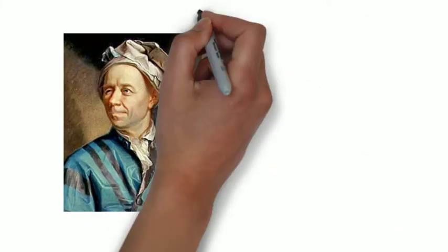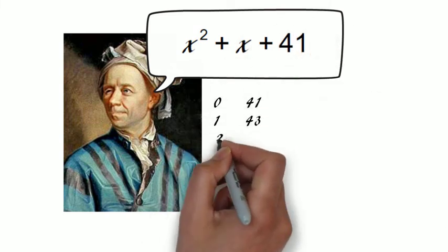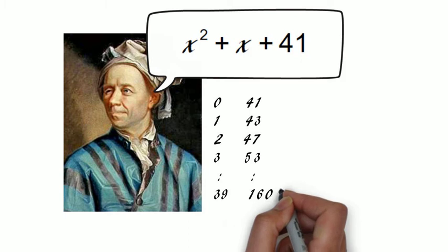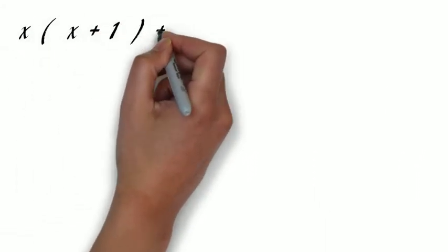Euler was first to notice that x squared plus x plus 41 generates primes for every x between 0 and 39. It's important to notice that the quadratic can also be written in this form, where 41 is a prime.